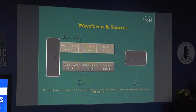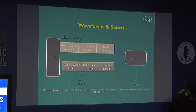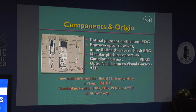Different parts of the retinal pathway generate distinct waveforms. The A wave of the flash ERG is generated by the photoreceptors — the only cells in the eye that respond directly to light. Everything else is a processed signal. The B wave is generated by the bipolar cells, reflecting inner retinal function. Testing in dark (scotopic) conditions stimulates the rod pathways, while bright light (photopic) conditions stimulate the cone pathways. Always remember the vertical and serial organization of the retina when reading an ERG.